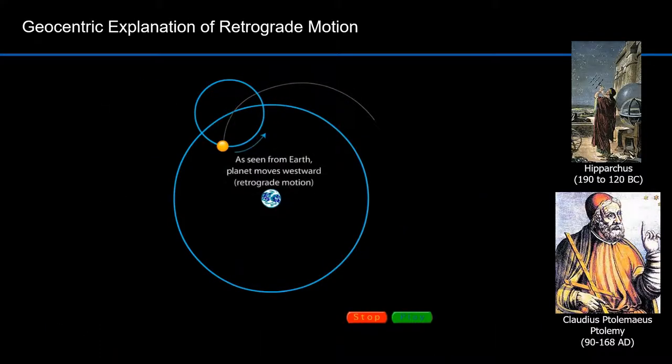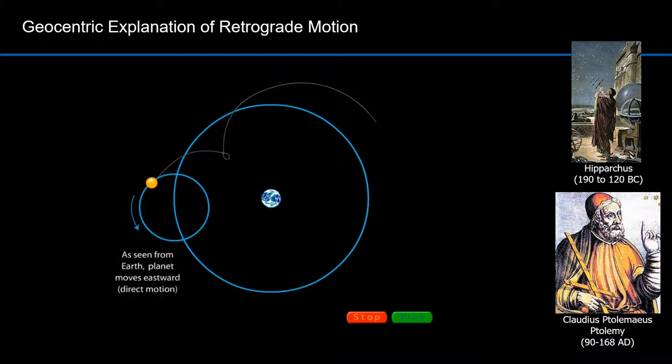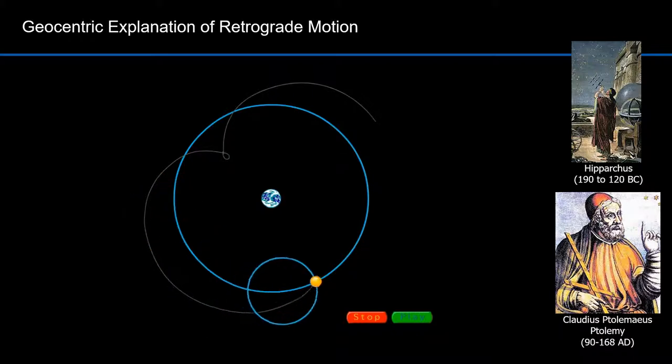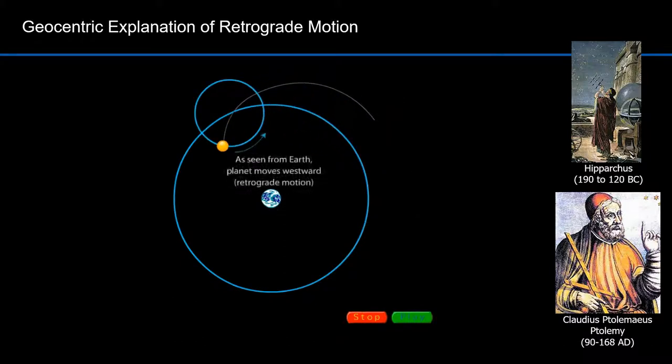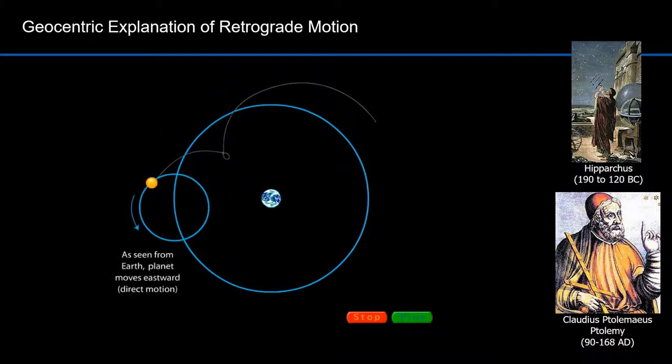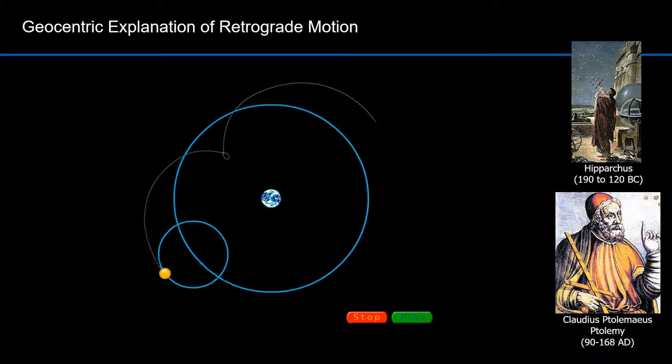Ptolemy was a mathematician, astronomer, geographer, astrologer, and poet. Hipparchus, and later Ptolemy, came up with a way to predict the motions of planets that accounted for their odd retrograde motion. The large circle is called a deferent. The smaller one is an epicycle. In this animation, you can see how this model accounts for the observed retrograde motion of the planets.